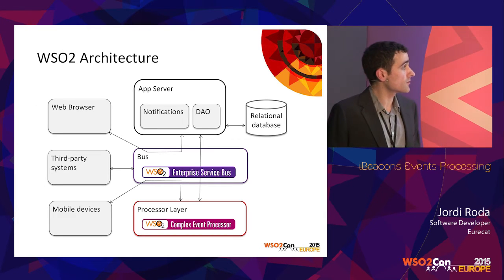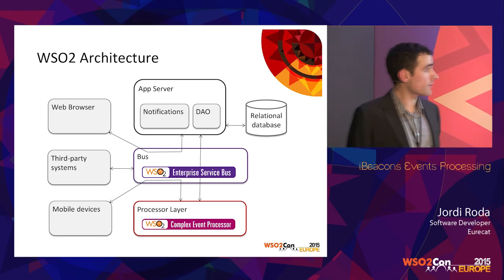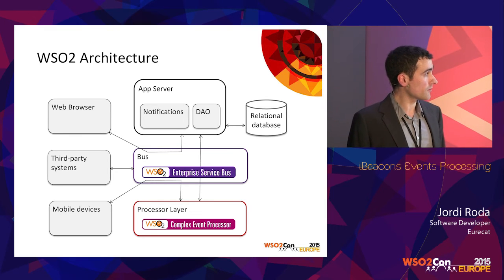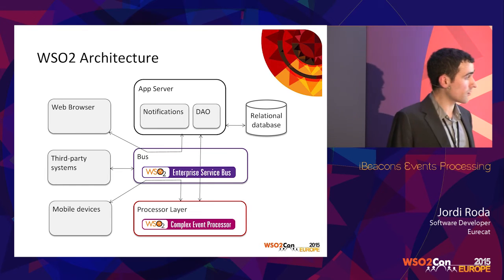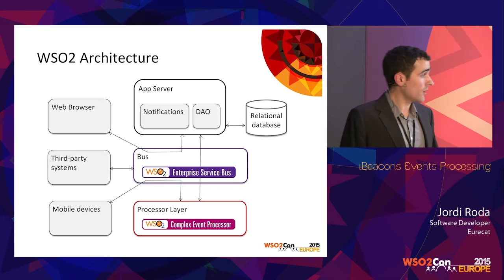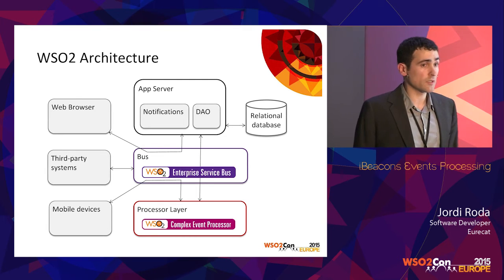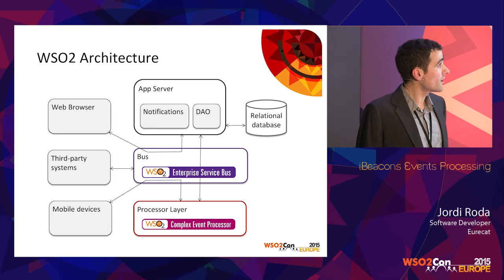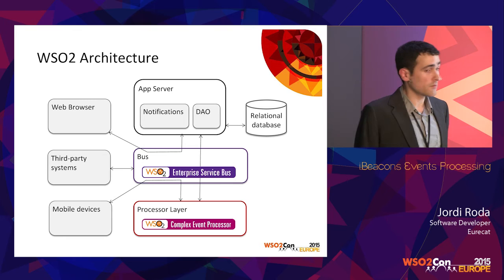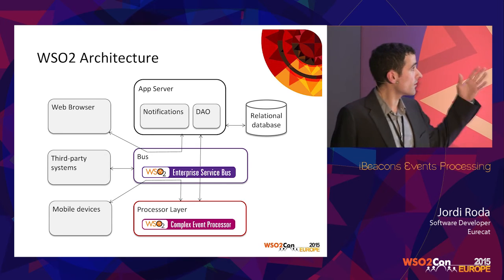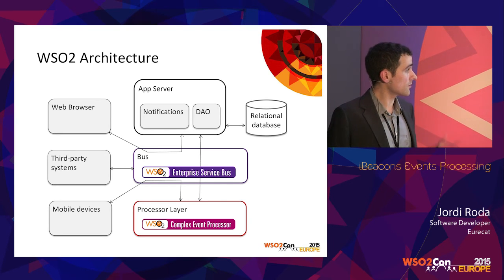Here is the architecture with these two products. In the middle we have the enterprise service bus handling all the messages and events and redirecting to every system. The complex event processors act as our business services processing all the events. We also have an application server storing all the events in our relational database, a notification service sending notifications based on events, and a web browser with the user interface, along with third parties consuming events through the enterprise service bus.